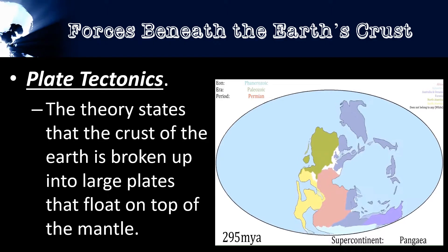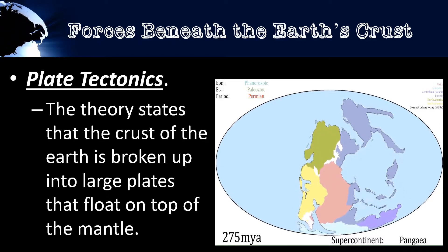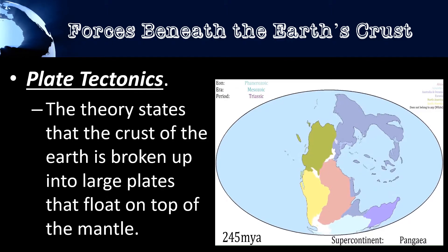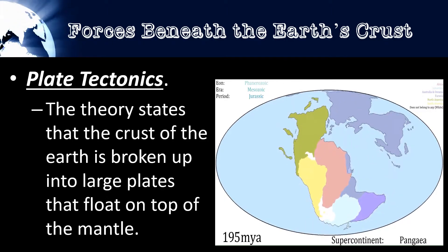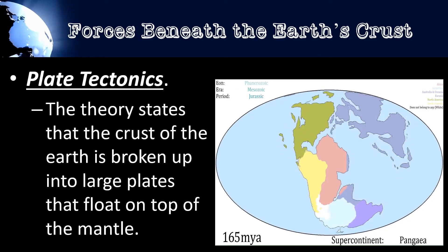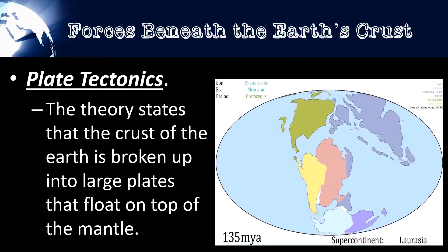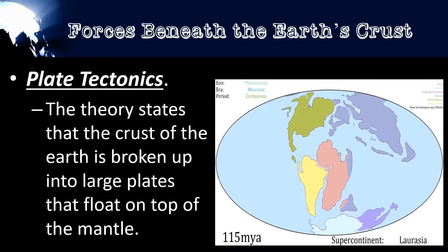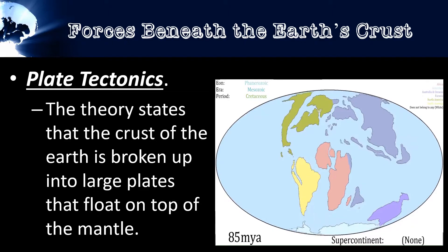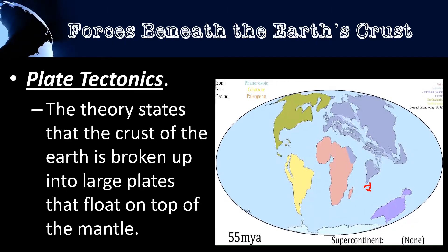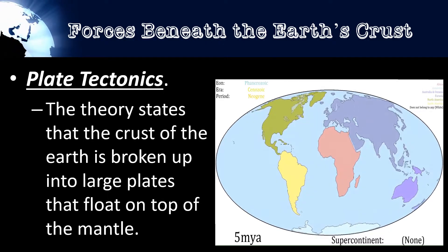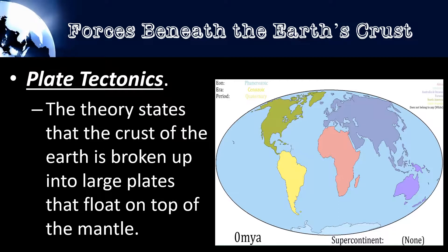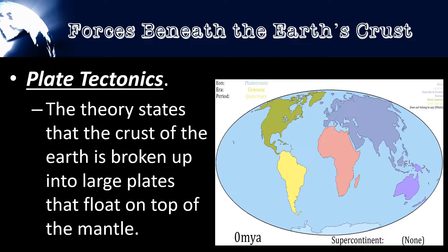Over time, the Earth we've seen is going to change. You can see in this video going from the supercontinent of Pangaea to what we have today — those familiar continents: North America, Europe, Asia, Africa. By the way, this right here is India. Also South America, Australia, and Antarctica. Over the course of millions of years, this has reshaped the surface of the Earth.